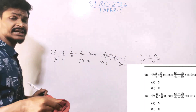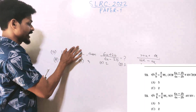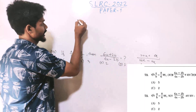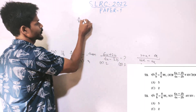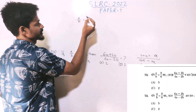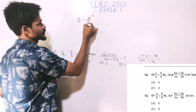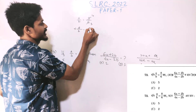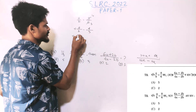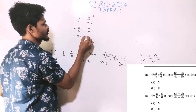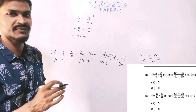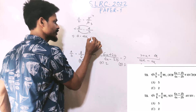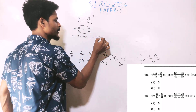Next question: if a by b equals 8 by 6, find the value of 6a plus 2b over 4a minus 2b. Since a/b = 8/6 = 4/3, let a equal 4k and b equal 3k using common ratio k.